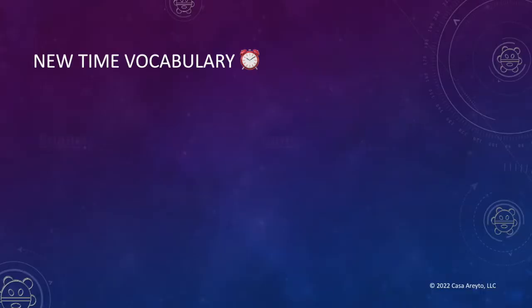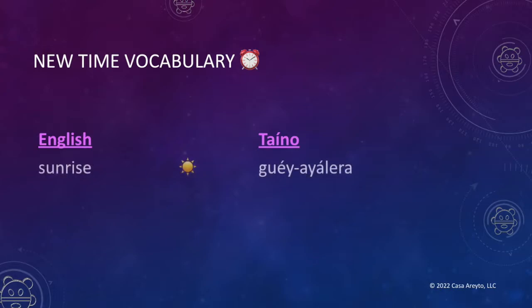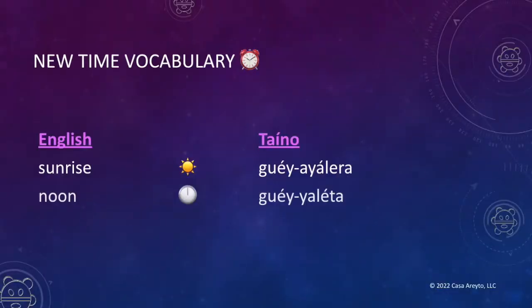Let's start with new vocabulary. Sunrise — guayaleta. Noon — guayaleta. You've seen the word yaleta before when we talked about yaleta, which is lunch. Sunset — guayaxacata.